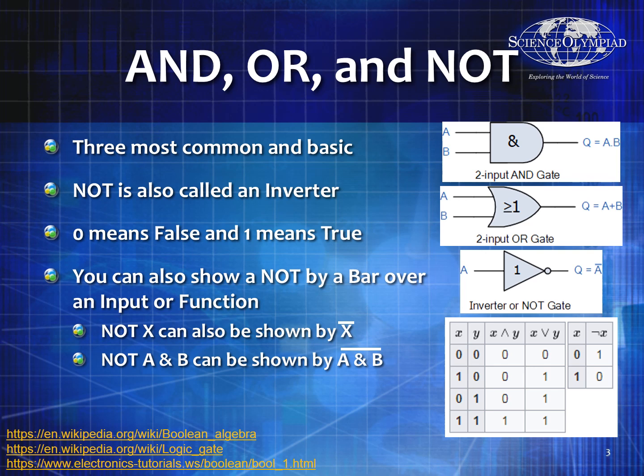An OR means that one or the other, or potentially both, have to be true for it to be true. So you'll notice that the only time you get a NOT true or a 0 is if they are both 0. And there is a myriad of ways of showing this — my recommendation is know all the different ways because you don't know what the event supervisor is going to use.